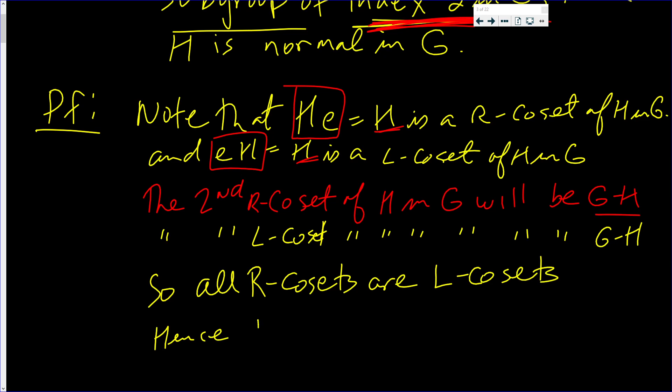H is normal in G. Let's say it clearly: All right cosets of H in G are left cosets of H in G.